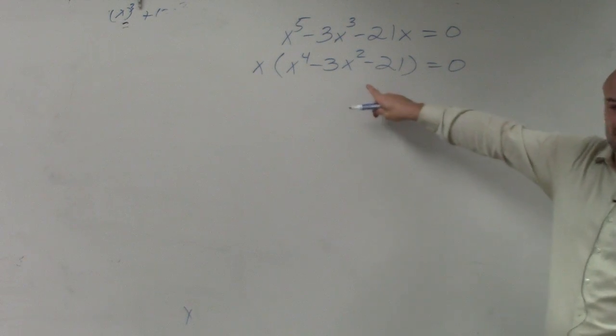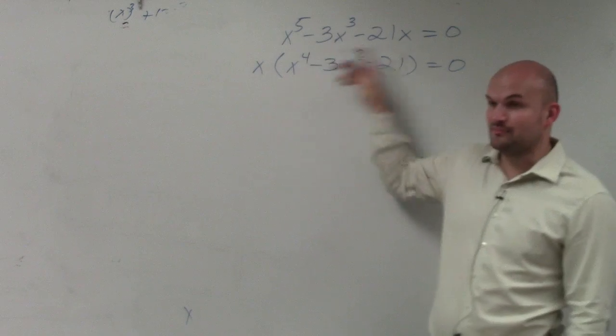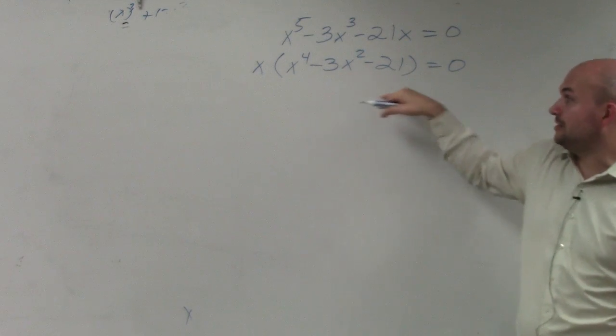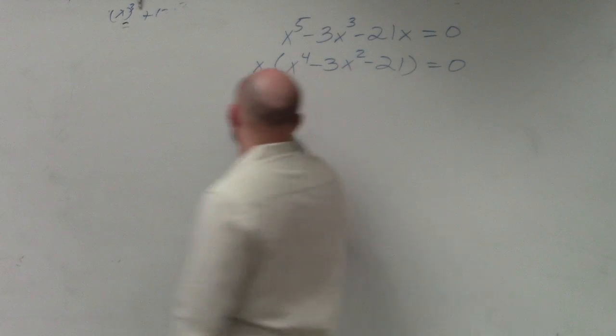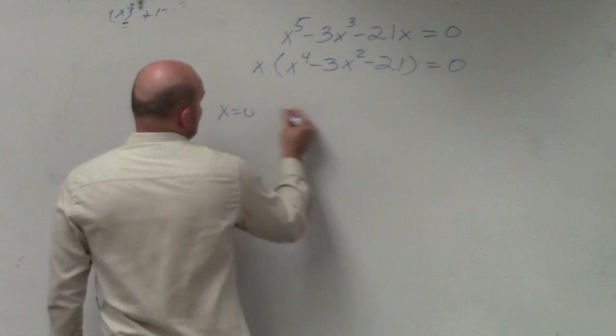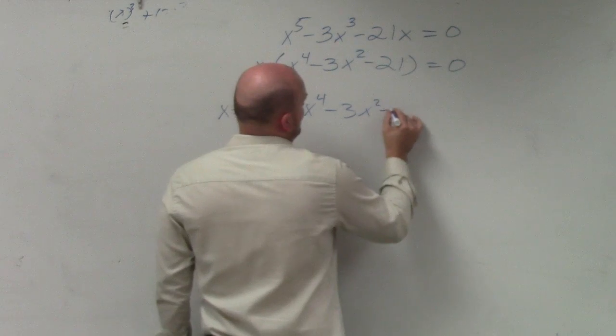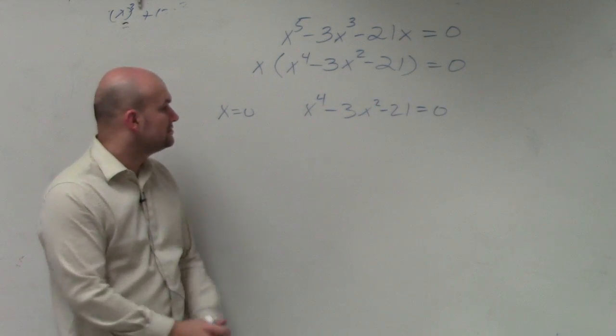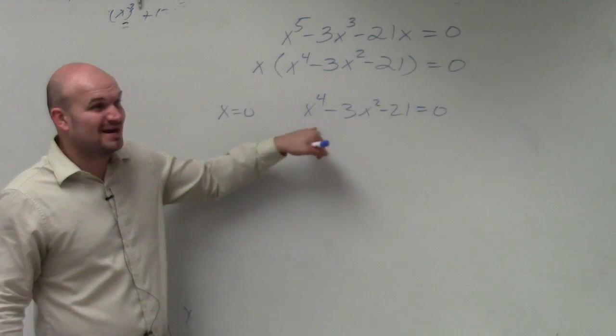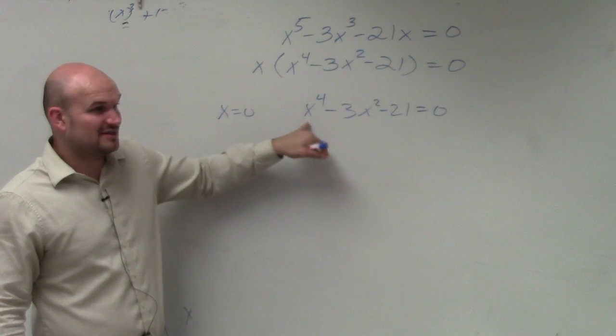Yes, I did rewrite this as a product, but if I'm going to set that equal to 0, I still need to solve that. So you could set them both equal to 0. So x times (x^4 - 3x^2 - 21) equals 0. So we got one answer, but we know there's four more answers in here. So we've got to figure this out.